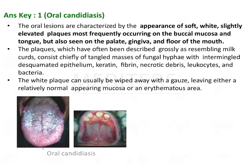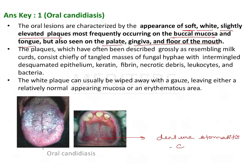Oral candidiasis lesions are characterized by the appearance of soft white slightly elevated plaques, most frequently occurring on the buccal mucosa and tongue, and also seen on the palate, gingiva, and floor of the mouth. The form occurring on the palate is known as denture stomatitis.